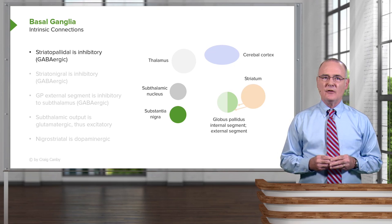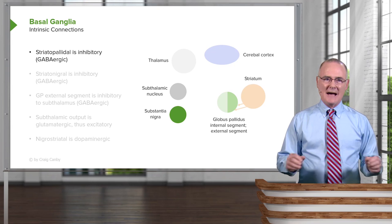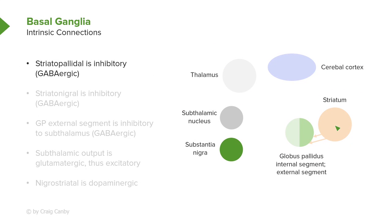First is the striatal-pallidal connection between the members of the striatum and the globus pallidus. These fibers are inhibitory, as they are GABAergic. We also have the striatal-nigral pathway extending from the striatum to the substantia nigra, which is also inhibitory and GABAergic.